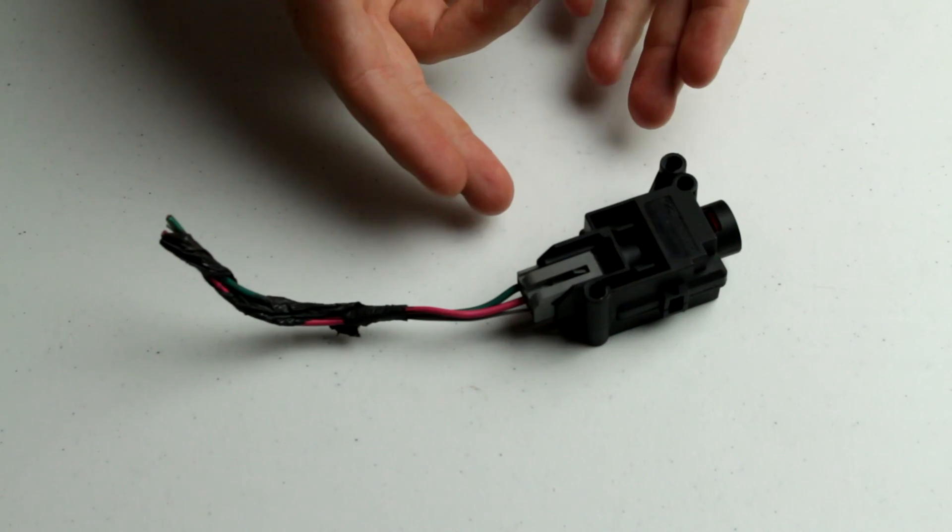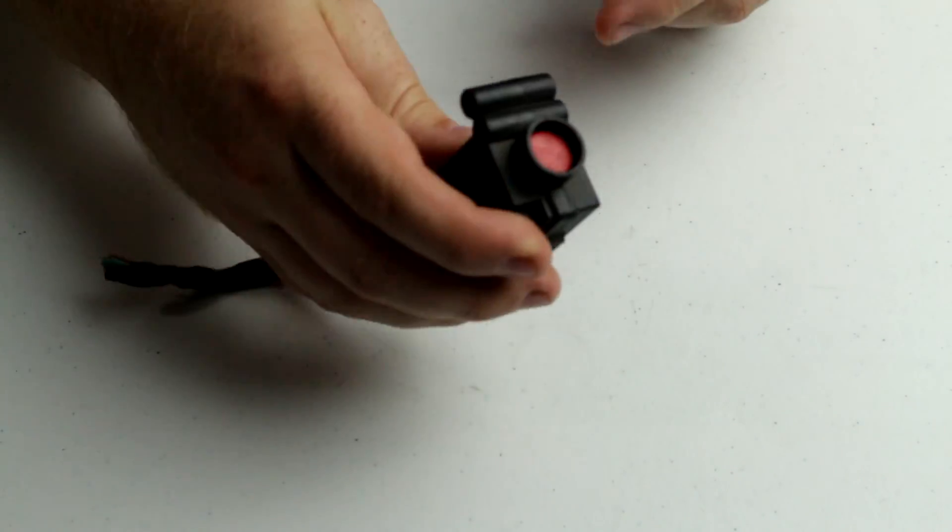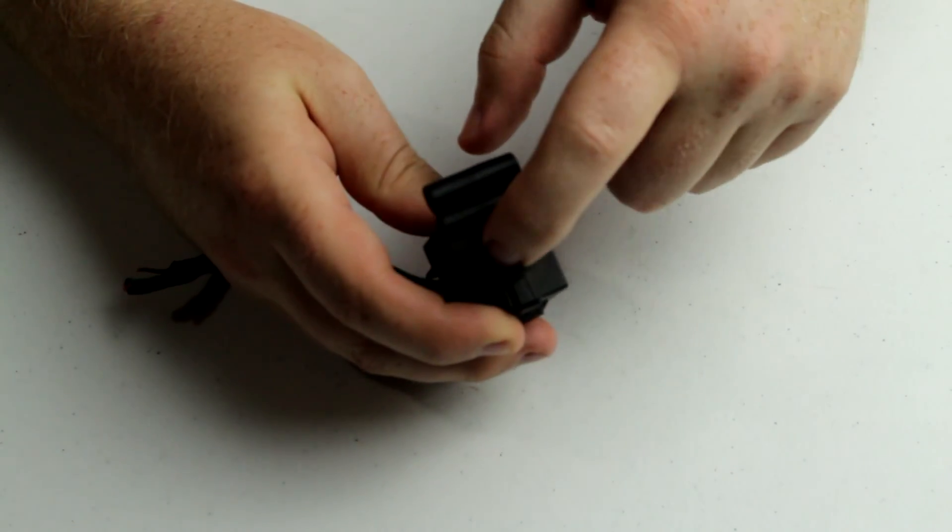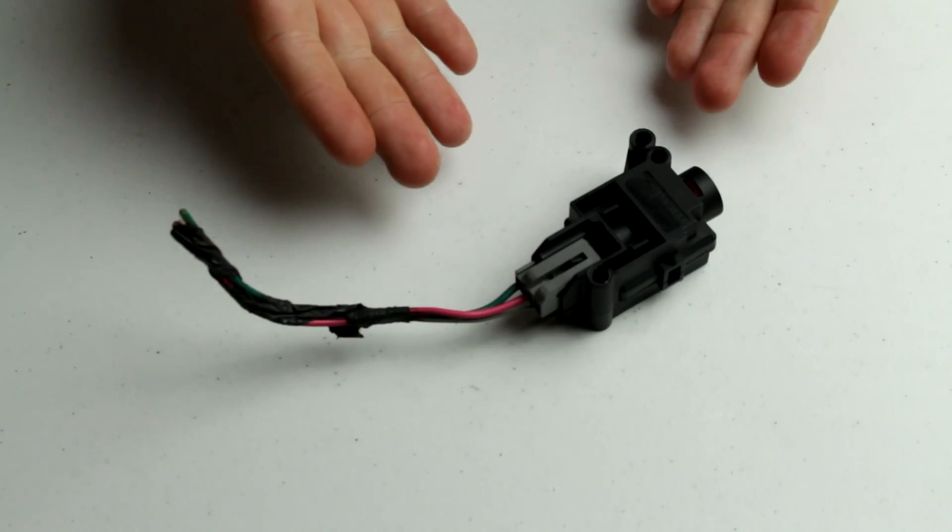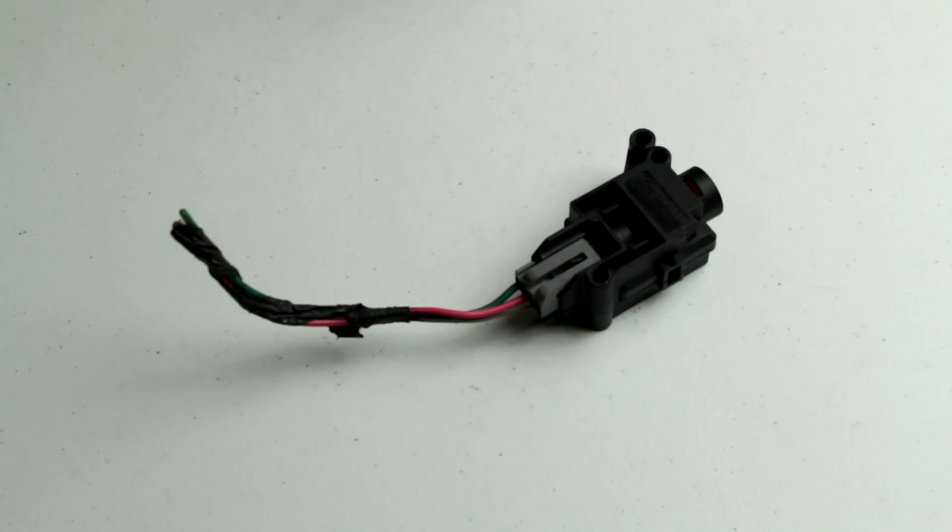It stays in the on position which is just how it is here. You notice there's a red button on here and it's in the down position. As you're driving along this is allowing electricity to flow through it.